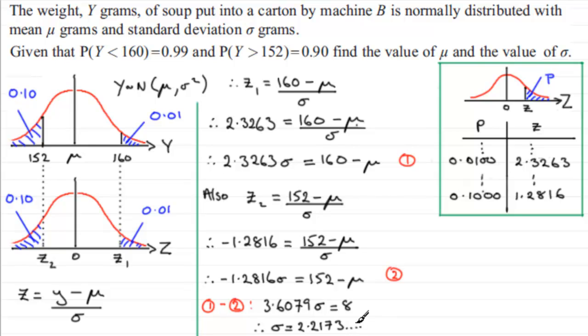Now that we've got that value, what we can do is simply substitute this back into either equation 1 or equation 2. So, I'm going to sub this value back into equation 1 and rearrange. And if we do that, then you can see that mu, if I add mu to both sides and subtract 2.3263 sigma, I end up with, therefore, mu equaling 160 minus 2.3263 times by sigma.